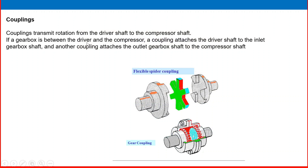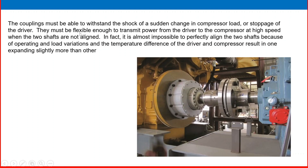Couplings transmit rotation from the driver shaft to the compressor shaft. If a gearbox is between the driver and the compressor, one coupling connects the driver shaft to the gearbox inlet shaft and another connects the gearbox outlet shaft to the compressor shaft. The coupling must withstand sudden changes in compressor load or driver stoppage. It must also be flexible enough to transmit power at high speed when the two shafts are not perfectly aligned — in fact, perfect alignment is almost impossible due to operating load variations and temperature differences between the driver and compressor.